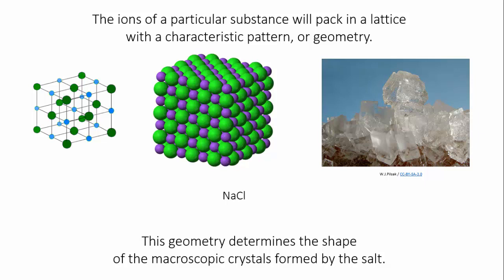As more and more ions are added to the lattice, the crystals eventually become macroscopic, and the shape of the crystal reflects the geometry in which the ions packed.